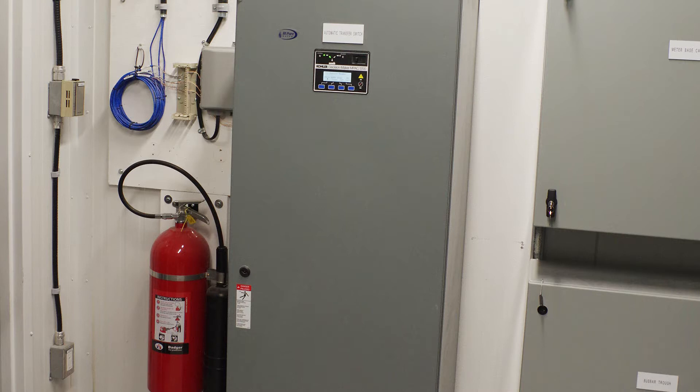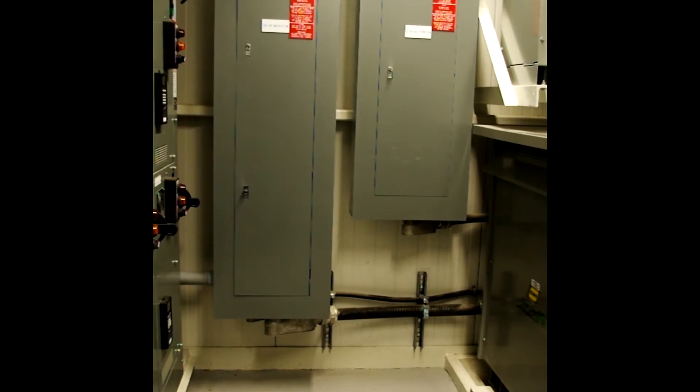And then to the left of that, you've got the telephone DMARC point and fire extinguisher. Okay, this is the electrical room in the other direction now.